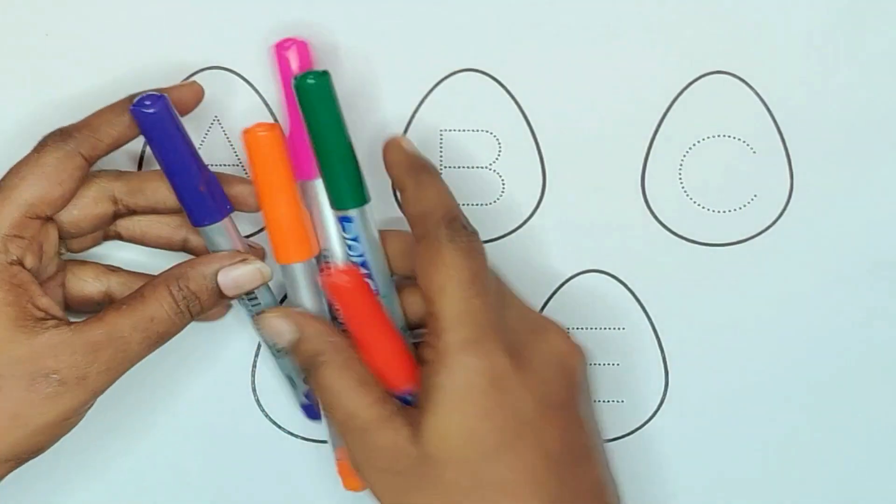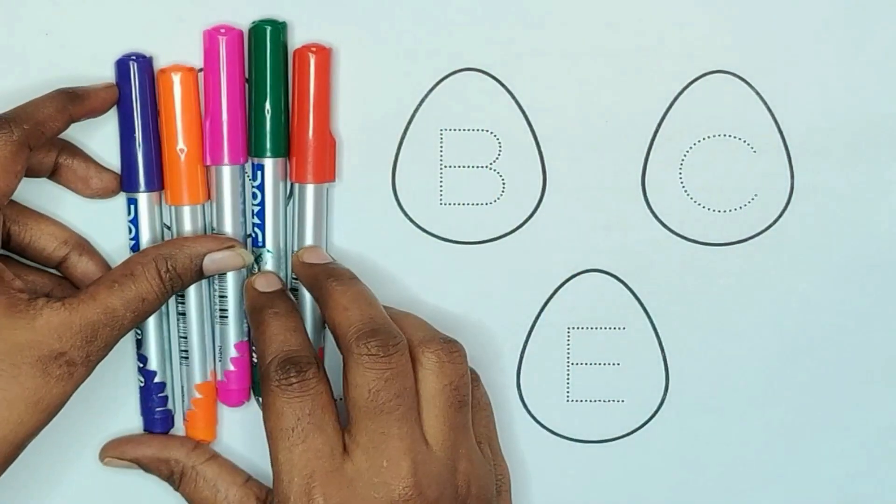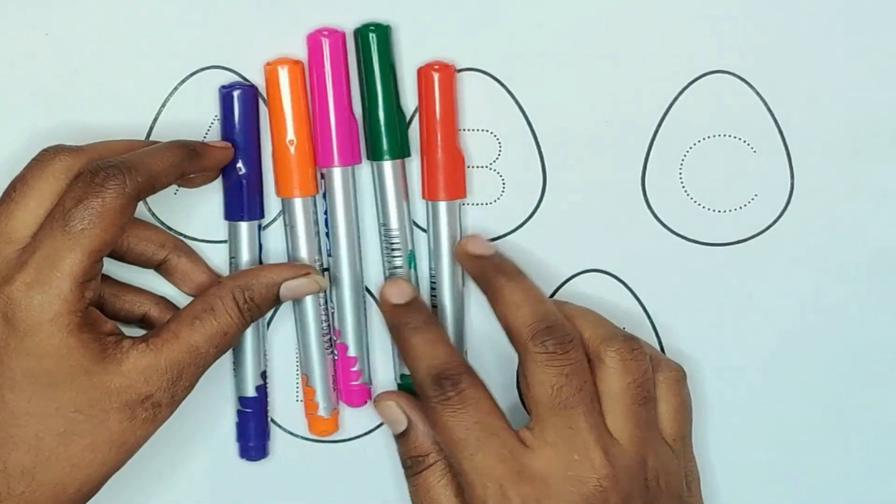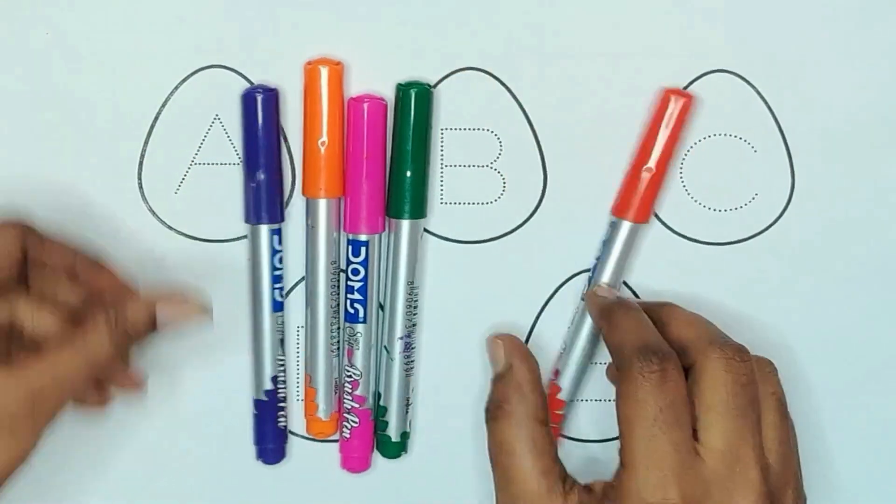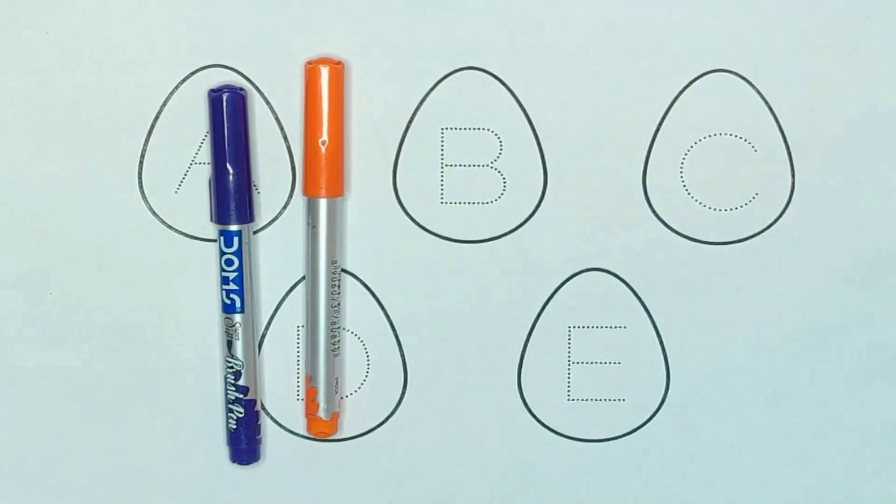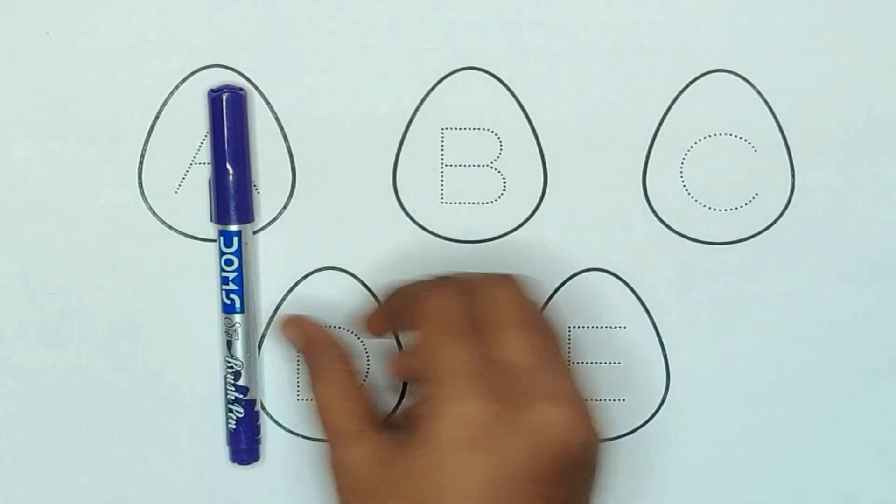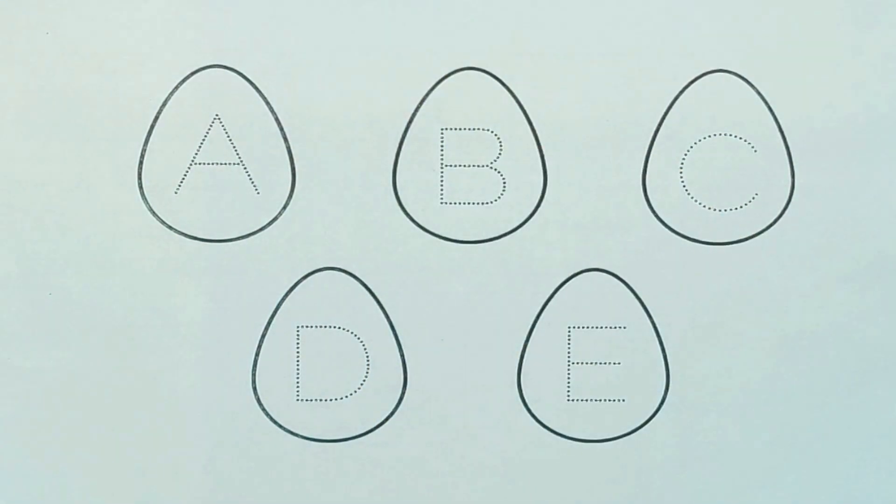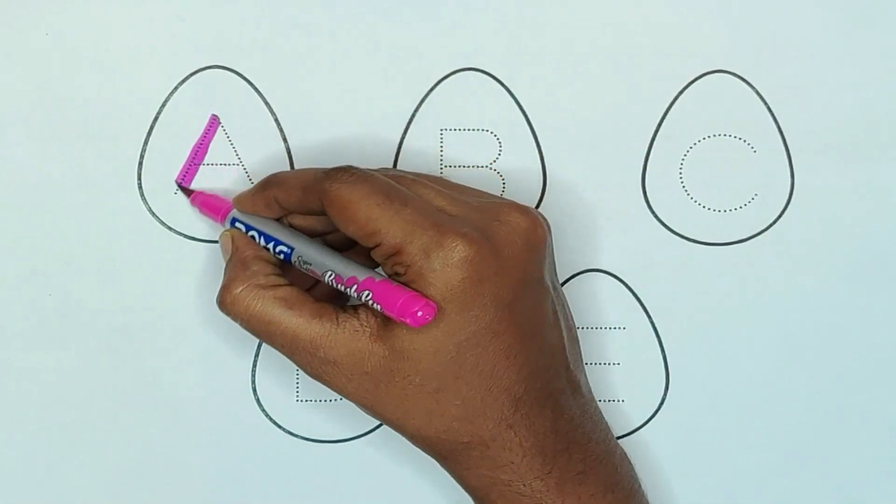Today we are learning alphabets with color paints. So color name is red color, green color, pink color, orange color and violet color. First pink color A,